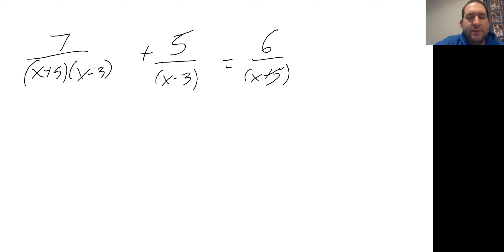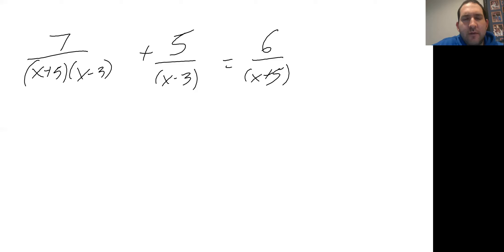We're going to continue solving equations with rational equations with fractions. Now we're going to talk about different types of equations that have polynomials — mostly binomials — in the denominator. Last couple of days we solved fractions with just numbers or single variables in the denominator, and yesterday we solved with one fraction on either side using cross multiplication. Today we're looking at equations with multiple fractions on one or both sides.